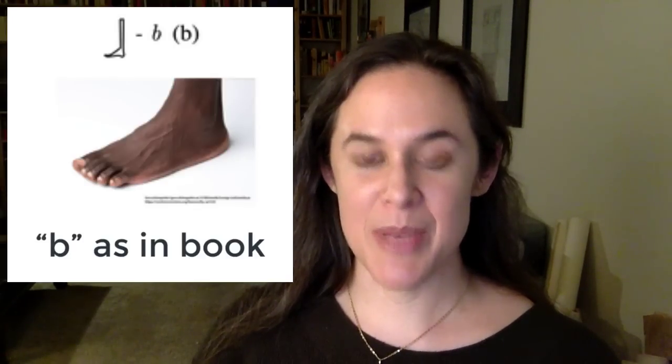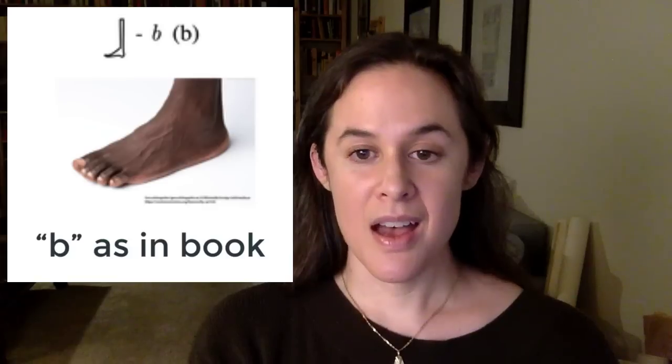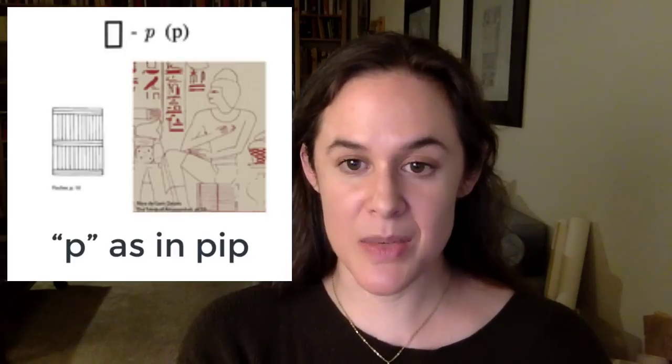Our next single-consonant hieroglyph is much more straightforward. It's simply the letter B, as in 'book,' and it's represented by a depiction of a human foot. Our next hieroglyph is pronounced P, as in 'pip.' It originally represented a stool or cushion made out of reed matting. Sometimes the interior details are filled in and it's a little easier to see what it represents. Other times, it's simply an empty rectangle.